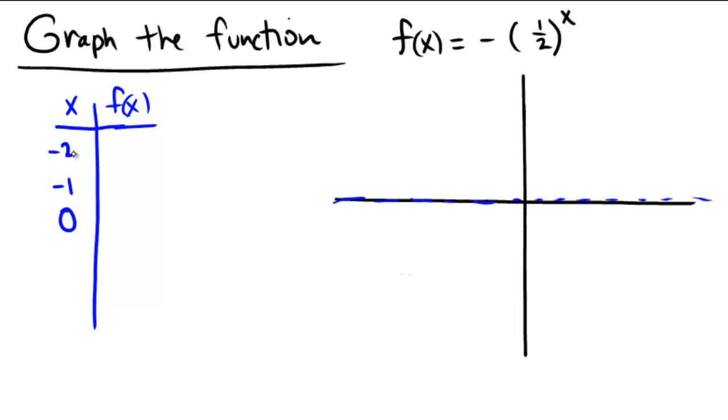And then we'll go down 2 and up 2. So we'll do negative 2, negative 1, 0, 1, and 2. Let's put in some numbers now. Let's go with the 0 first. 1 half raised to the power of 0 is always 1. Anything to the power of 0 is 1, except for 0. So we get negative 1 here.